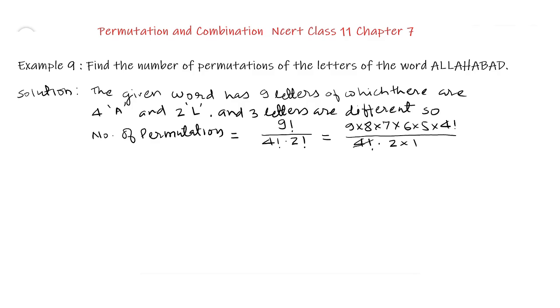We cancel denominator of 4 factorial with the numerator of 4 factorial and we cancel 2 by 8, we cancel 8 of numerator by 2 of denominator for 4 times.